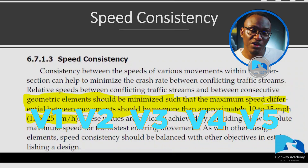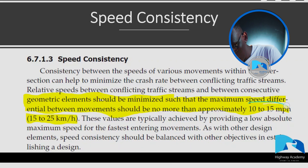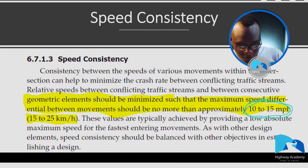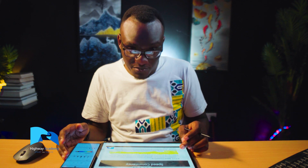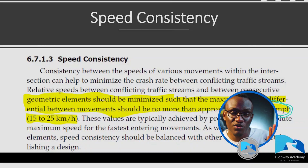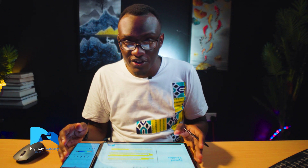As mentioned earlier, the main goal is to ensure speed consistency between V1, V2, V3, V4, and V5. There should not be a huge difference — roughly 10 to 15 miles per hour or 15 to 25 kilometers per hour. So if you're coming in at 40 kilometers per hour, make sure you step down by at least 15 to 25 kilometers per hour. Vehicle speeds can be improved by increasing or reducing the radius to ensure speed consistency.